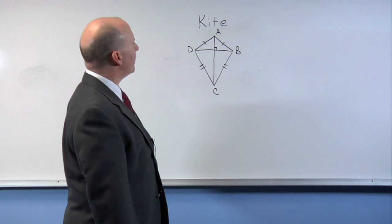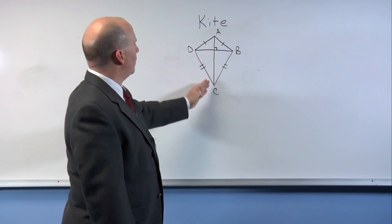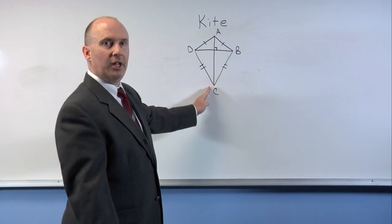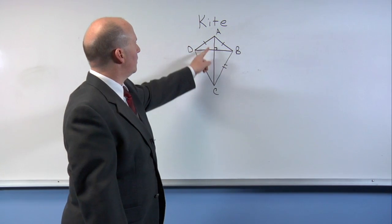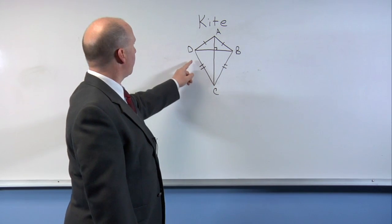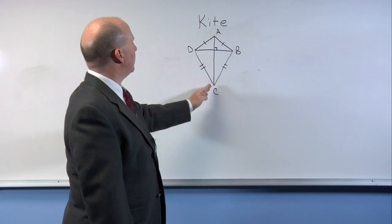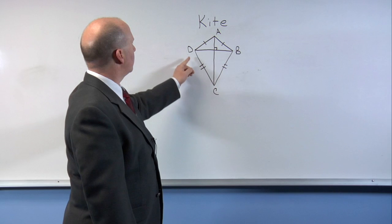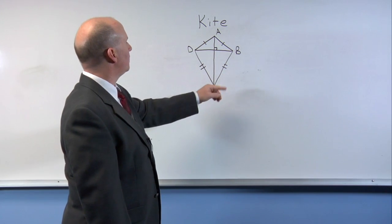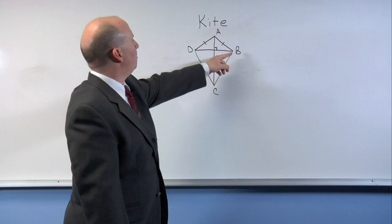If we take a look at diagonal A, C, notice how it cuts the kite in half. And if it cuts the kite in half, that means these two angles on the top and bottom must be congruent. So therefore, the diagonal A, C bisects angle D, C, B, and B, A, D.